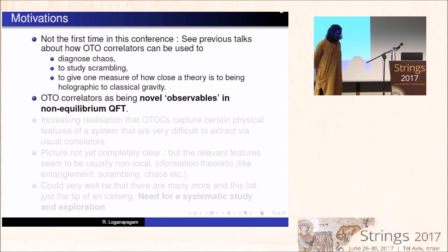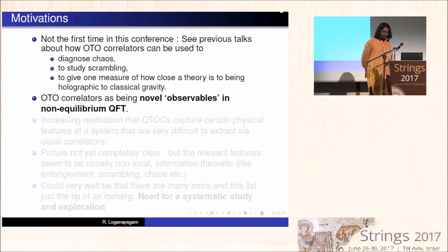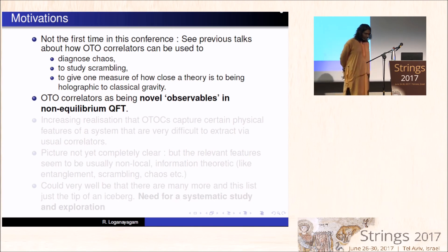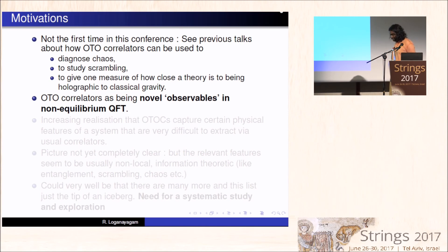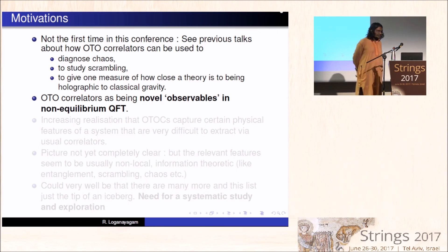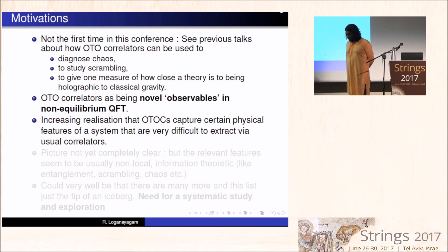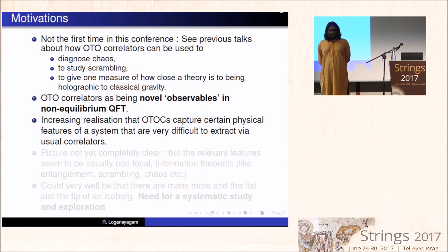That question, I think, is not at all answered. In some sense, they are novel observables in non-equilibrium quantum field theory and in general quantum field theory, and none of us have a really clear idea of what they contain or what kind of information can be gained from them, apart from these particular examples where we were looking for something and found that answer in the out-of-time-ordered correlators. There is an increasing realization that out-of-time-ordered correlators capture certain physical features of a system which are very difficult to extract from the usual correlators.